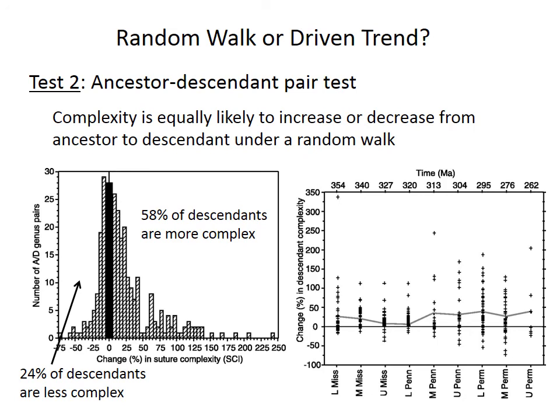The second difference between a random walk and a driven trend is in the ratio of increases to decreases. A random walk, by definition, is characterized by increases and decreases occurring in roughly equal proportions. But a driven trend should have an excess of one type — either more increases or more decreases than expected. In the ammonoid example, complexity was much more likely to increase than to decrease overall. In the left-hand graph, 58% of descendants in an ancestor-to-descendant pair are more complex, and only 24% are less complex. And in every time period examined, complexity more consistently increased from ancestor to descendant than it decreased.